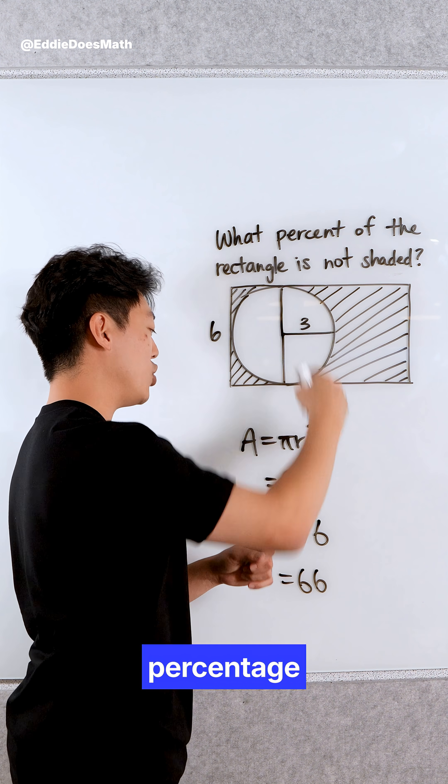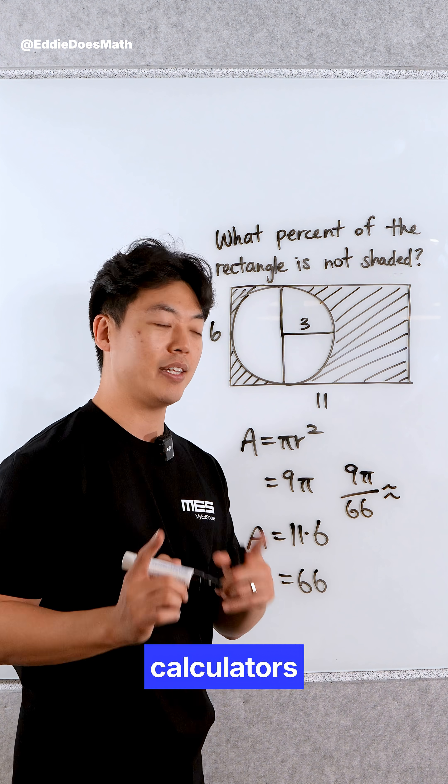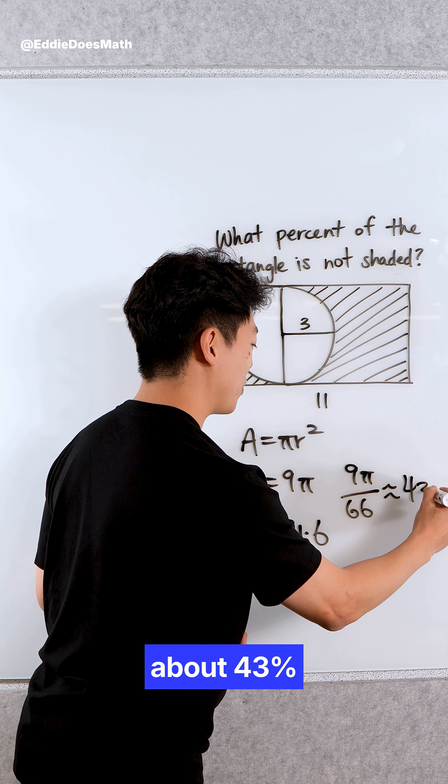Now in order to find the percentage, we need to put 9 pi over 66. Plug this into your calculators and you should get about 43%.